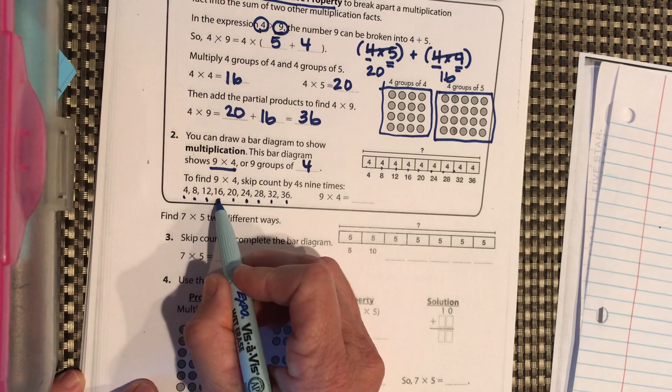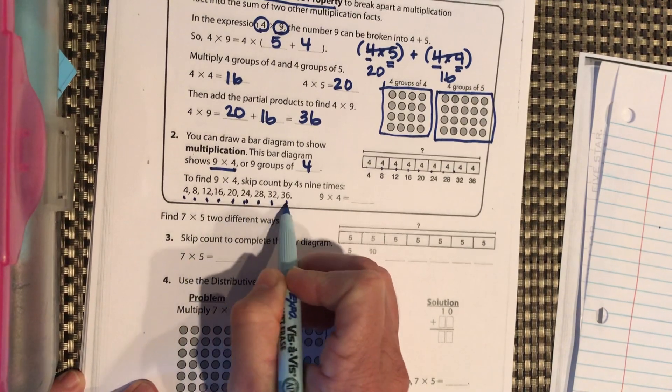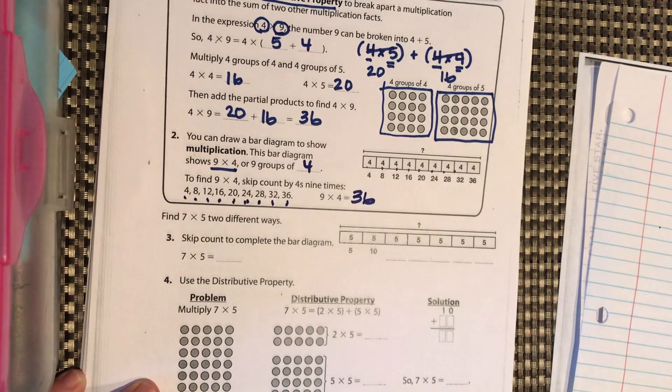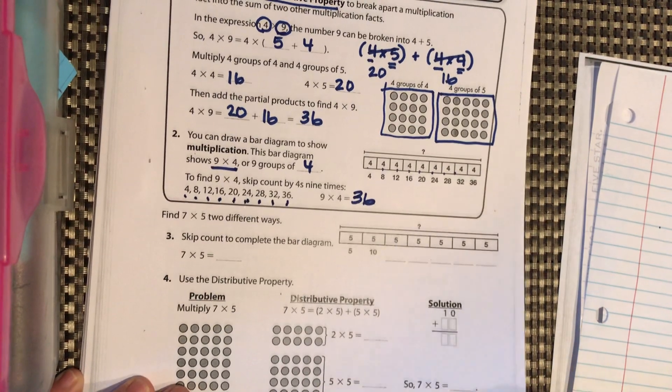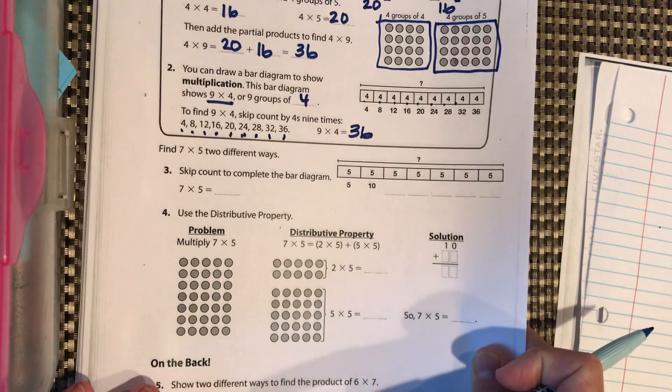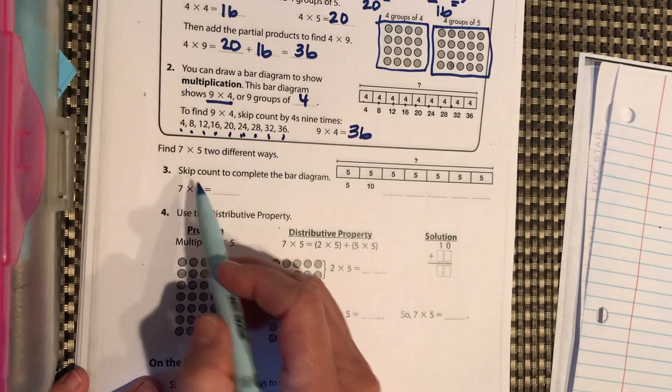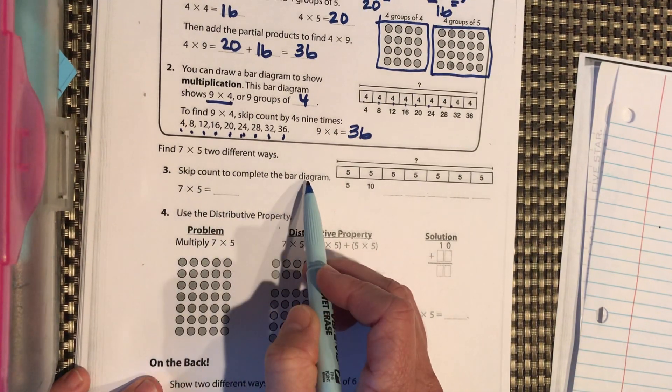We don't really need the 40 because that's the 10th. But 1, 2, 3, 4, 5, 6, 7, 8, 9. So 4 times 9 is 36. Okay, let's look at the bottom. Find 7 times 5, two different ways. So skip count to complete the bar diagram.